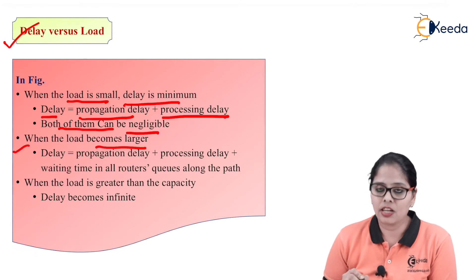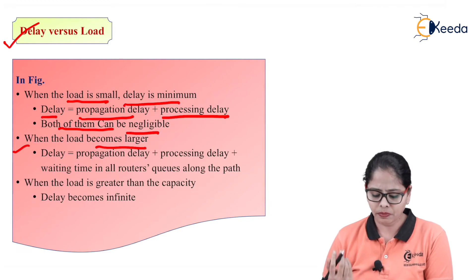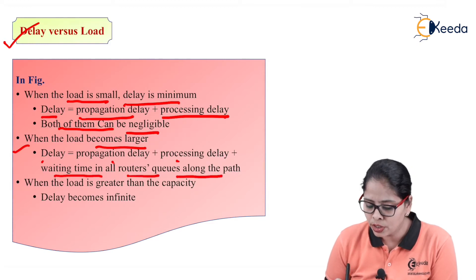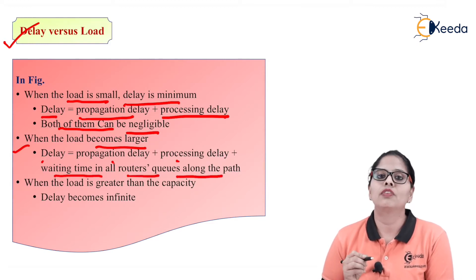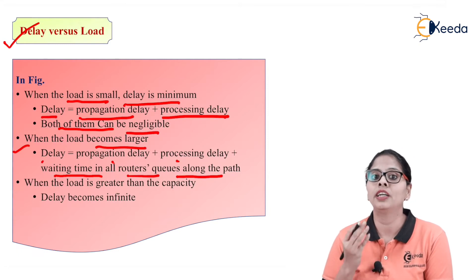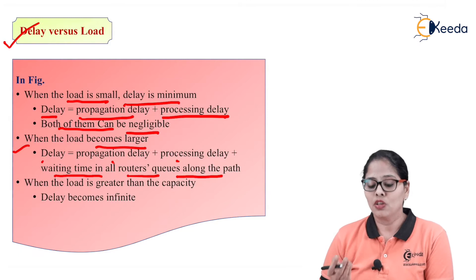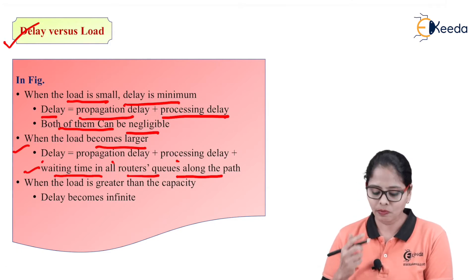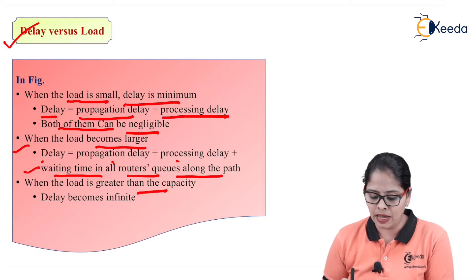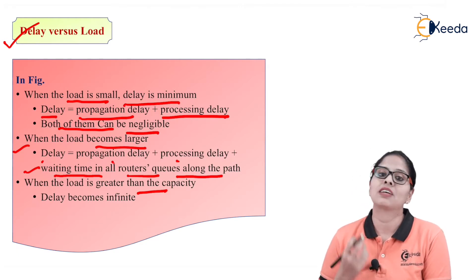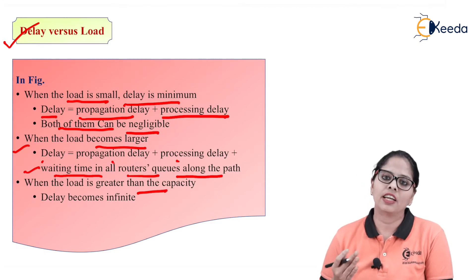When the load becomes larger and you send more packets, the delay includes propagation delay, processing delay, and waiting time in all router queues along the path. Whenever there is a large load, this waiting time increases and delay increases. When the load is greater than the capacity — when you are sending more packets than the network can handle — you will get infinite delay.